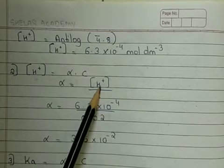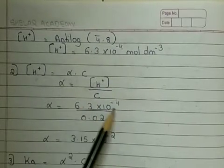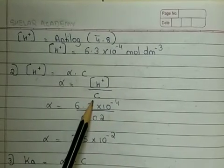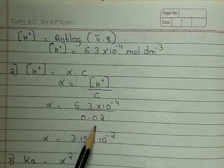So concentration of H plus ion value is 6.3 into 10 ratio to the power minus 4 and our concentration value C is 0.02.